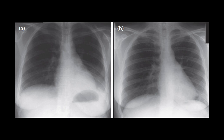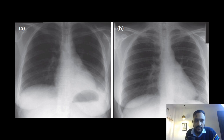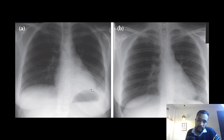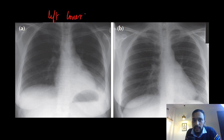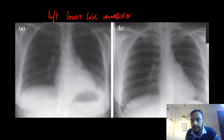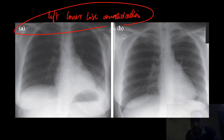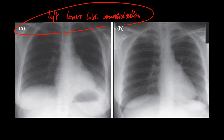...you will see that the left dome of the diaphragm is not visible in this patient. If the left dome of the diaphragm is not visible, it means there is left lower lobe consolidation in this patient. After treating this patient with antibiotics, we can see that the left dome of the diaphragm is very clearly visible.